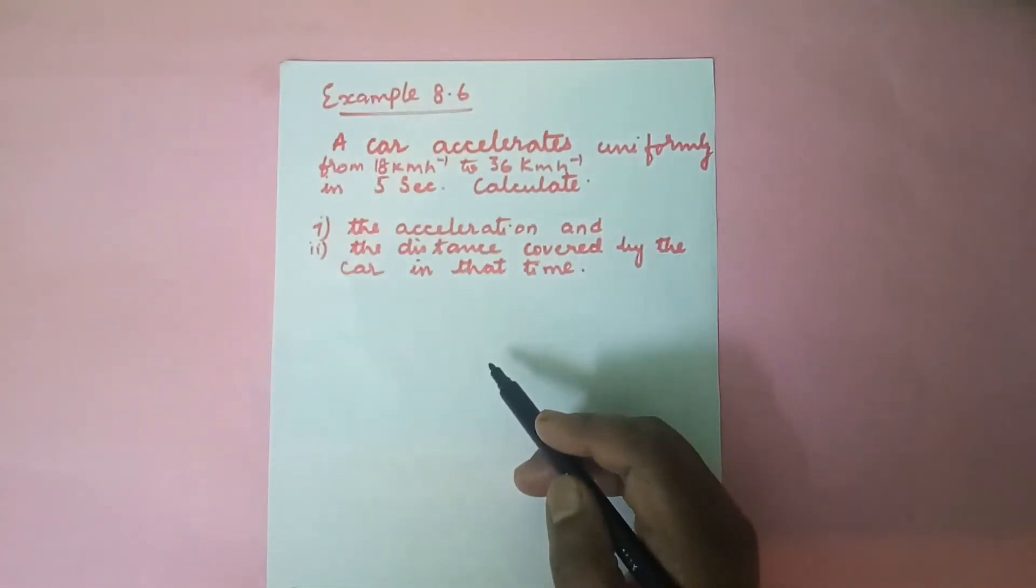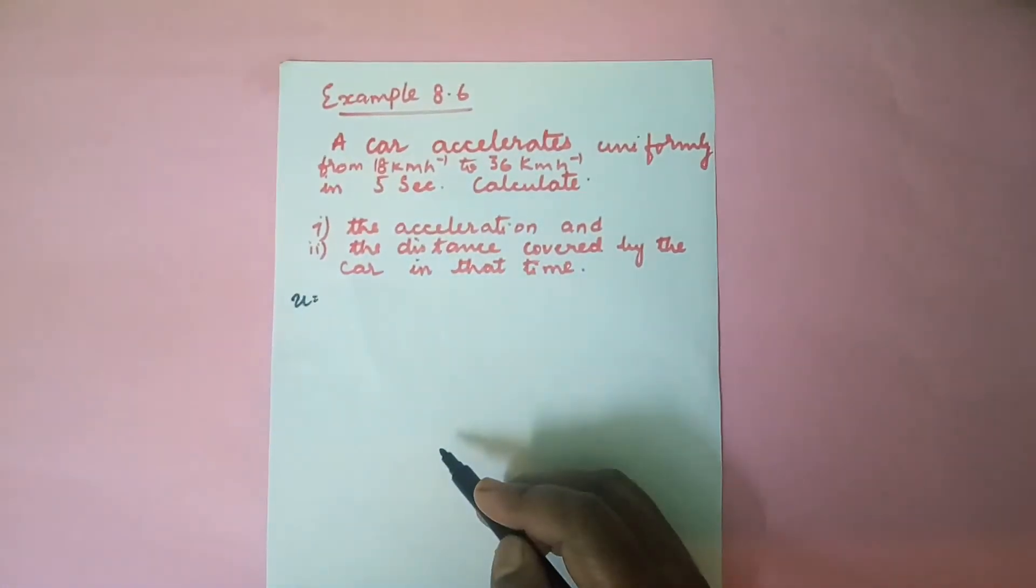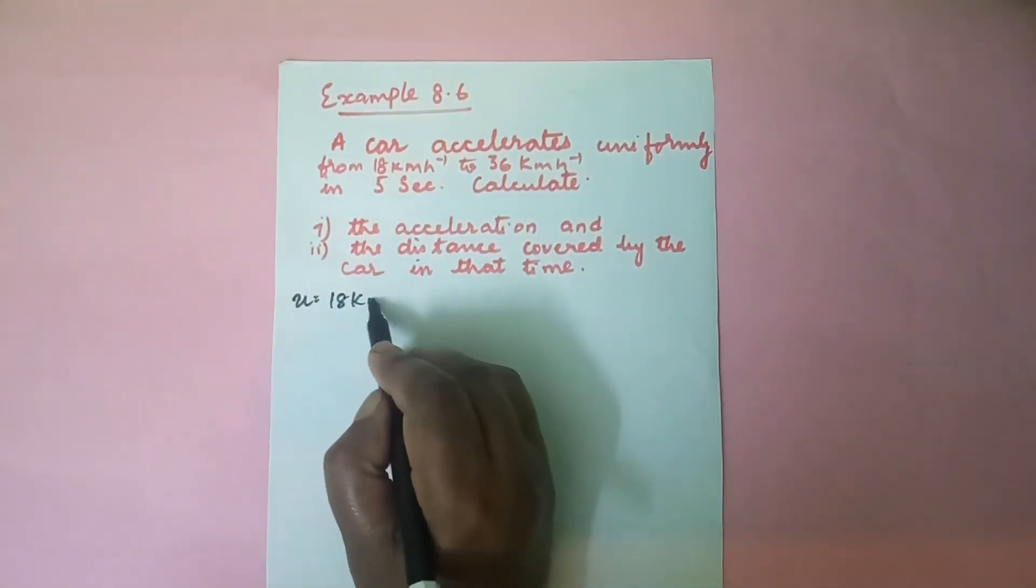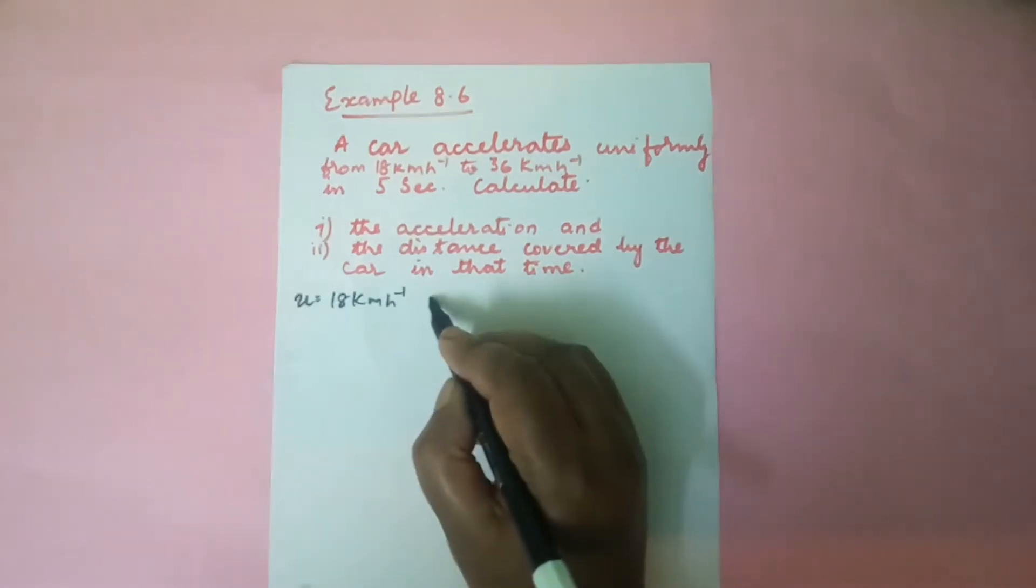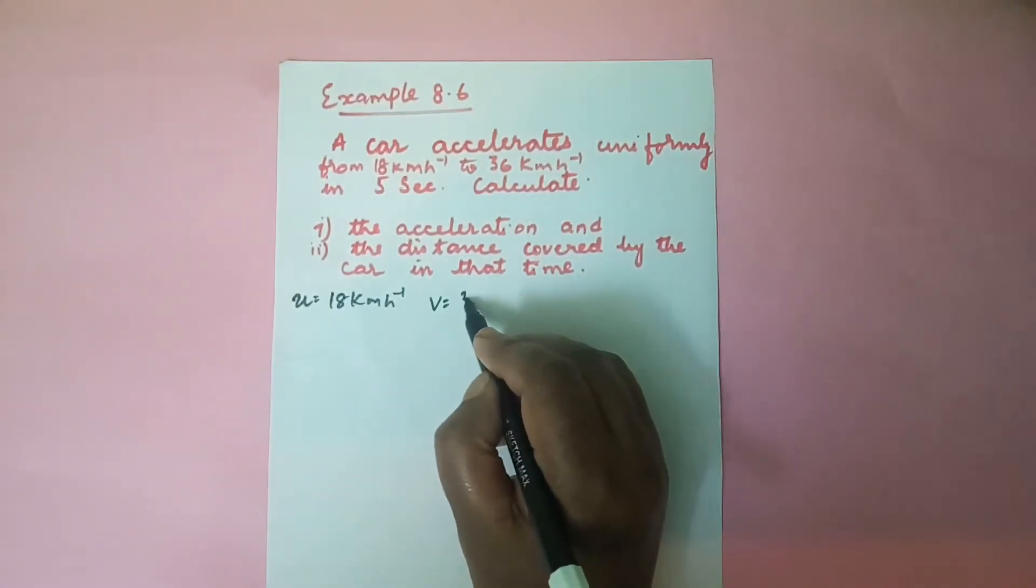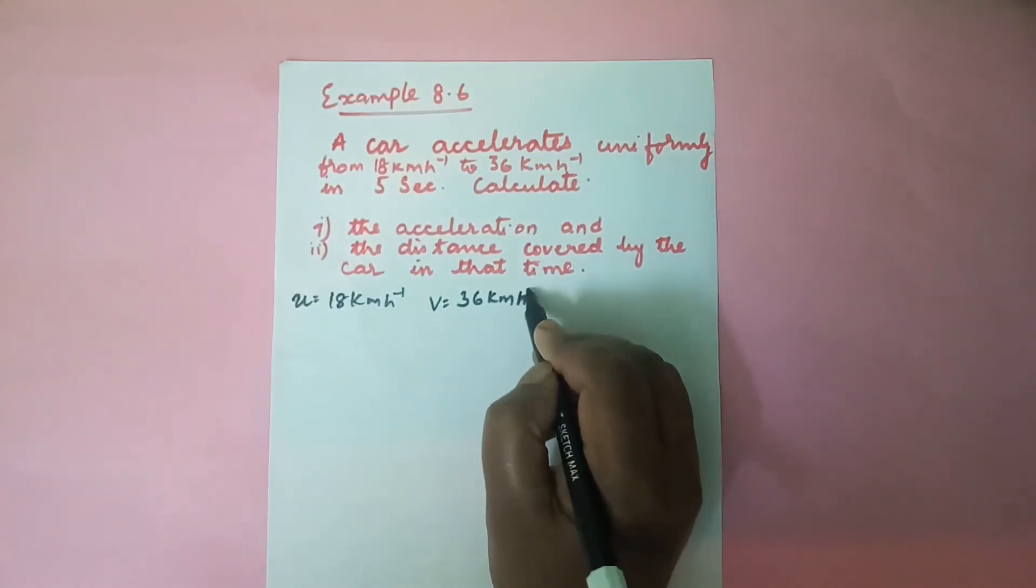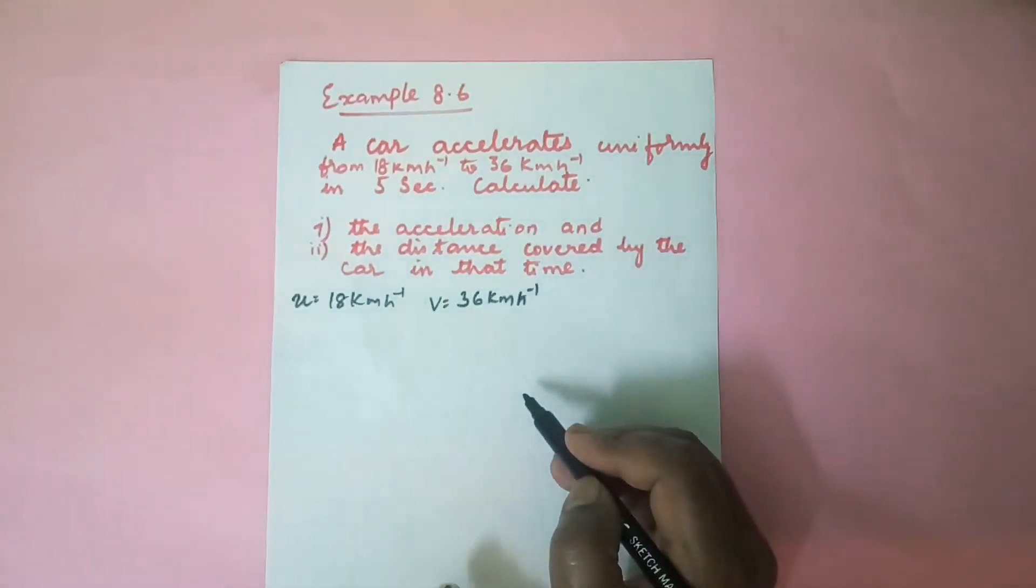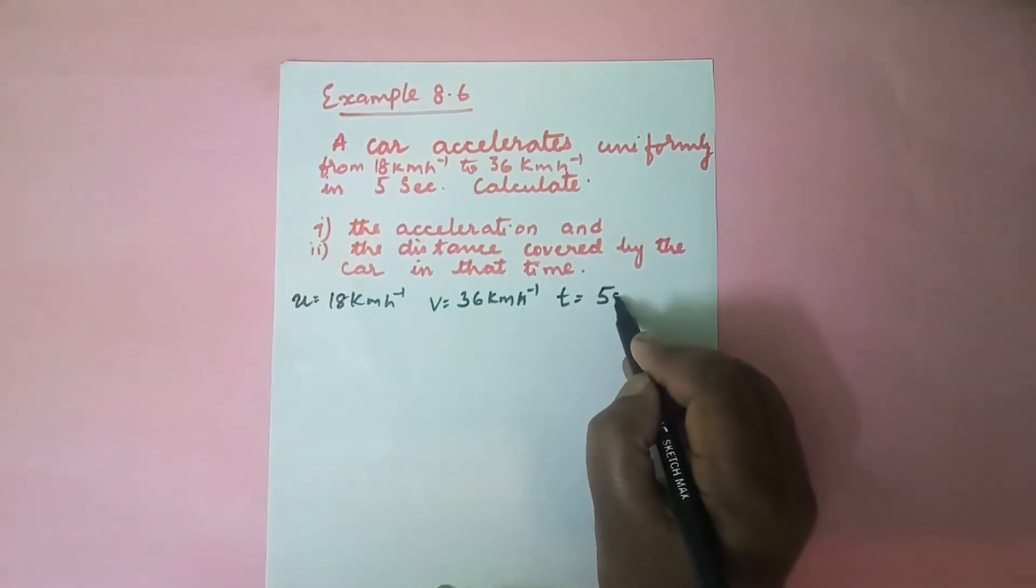First of all, let us write down what is given in the sum. So we have the initial value, that is u, it is 18 km per hour. And we have v, that is 36 km per hour. And time is also given, that is 5 seconds.